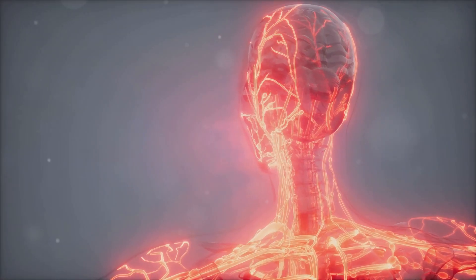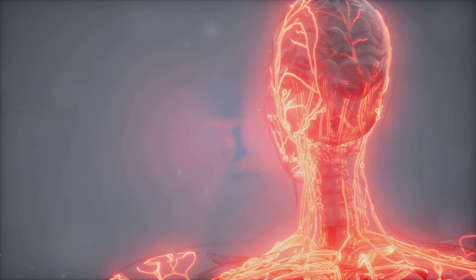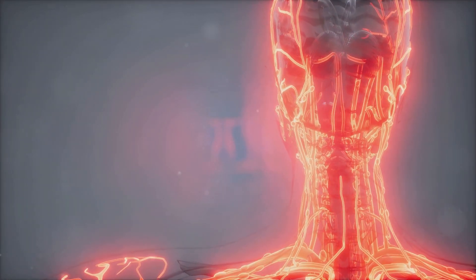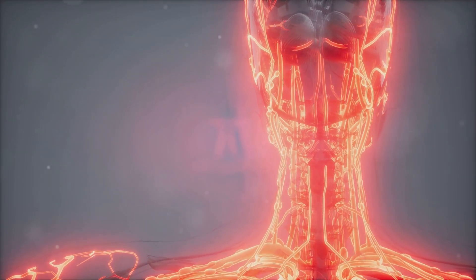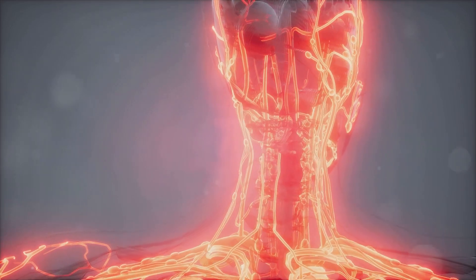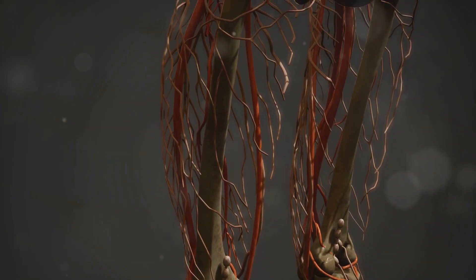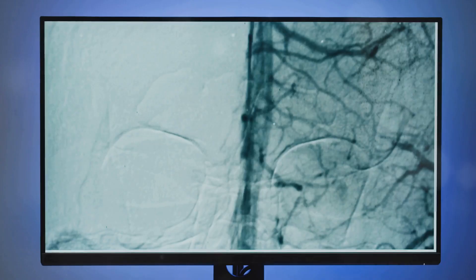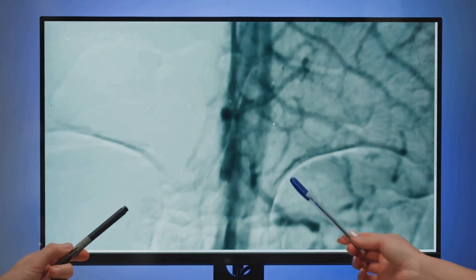The circulatory system is so vast that if you stretched out all your blood vessels end to end, they would circle the Earth more than twice. That's about 60,000 miles of vessels crammed inside your body. Talk about an efficient use of space.